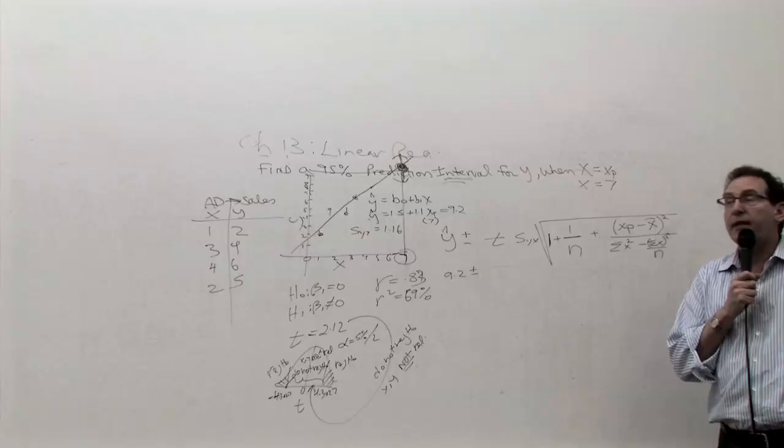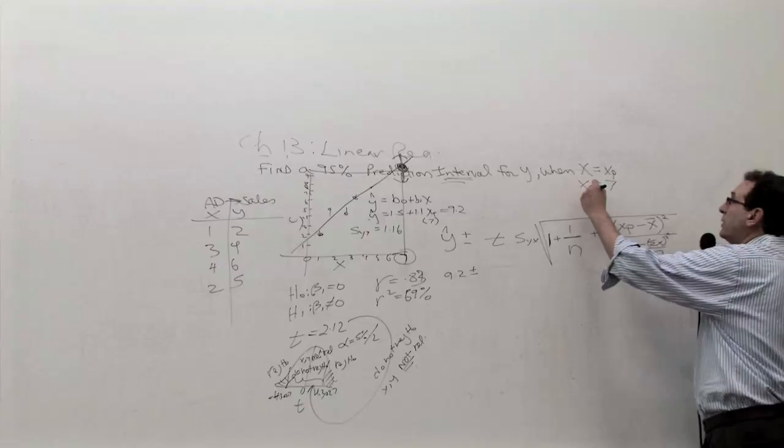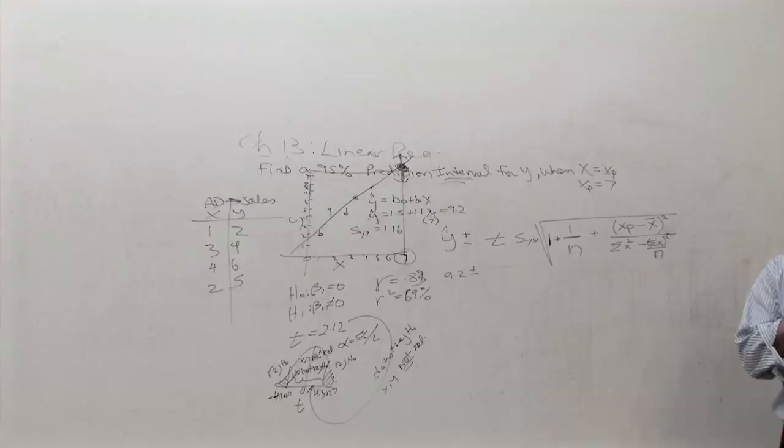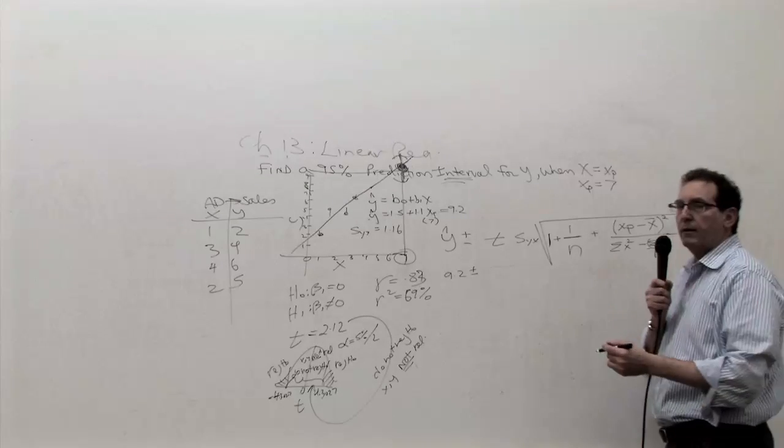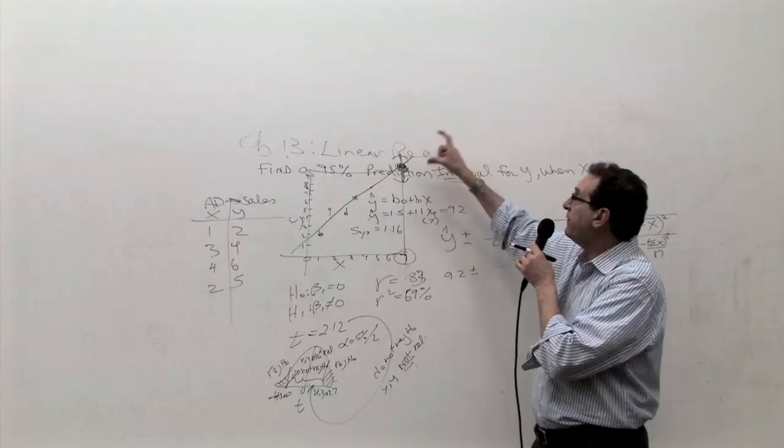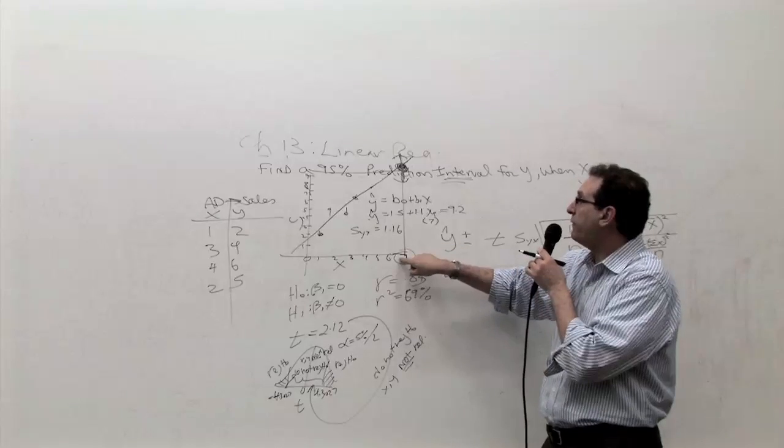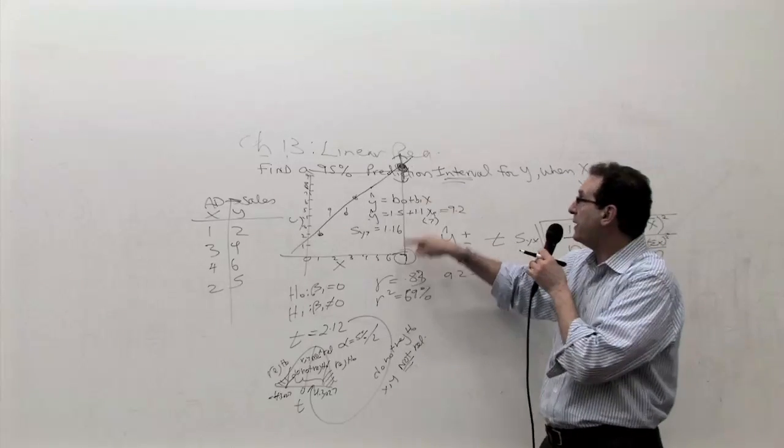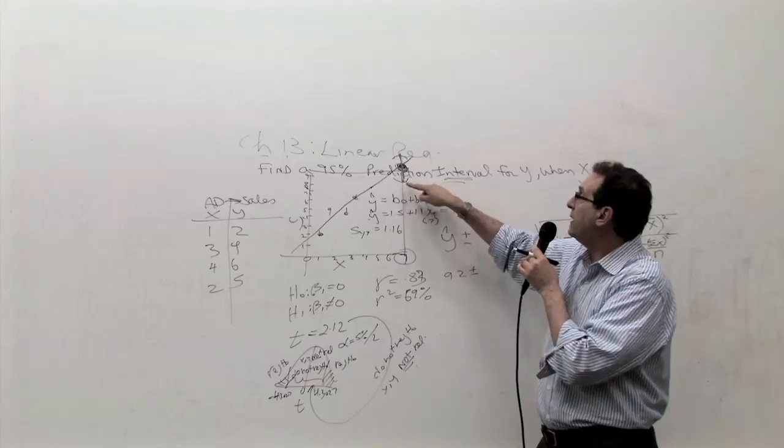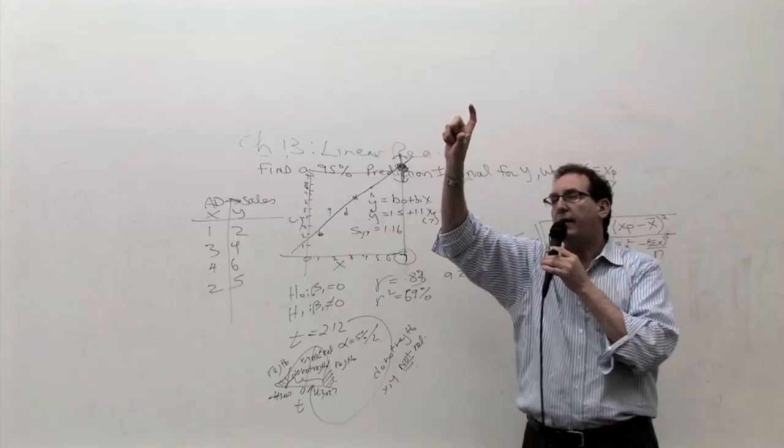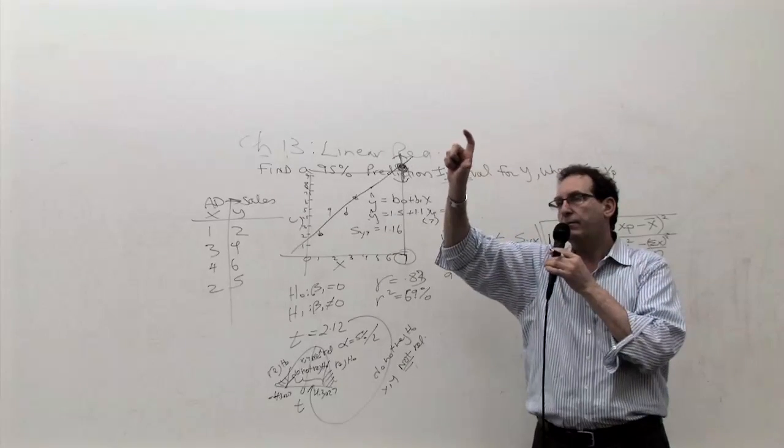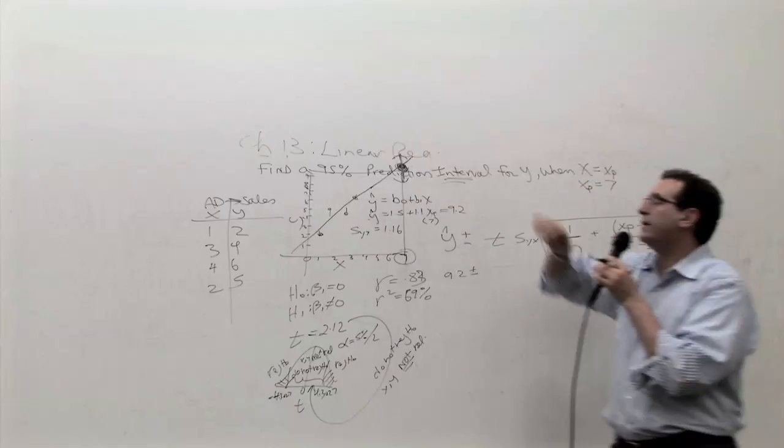The xp given? Yeah, the xp has to be given. In other words, you've got to be told what you're trying to make a prediction for. Which we want to end up with an answer and say, I'm 95% sure that if somebody, if I put in $7,000 worth of advertising, I can expect somewhere between six and $10,000 worth of sales.